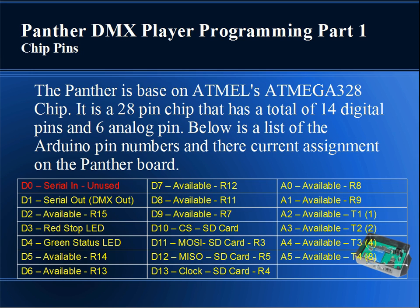Chip pins. The Panther is based on the Atmel ATmega328 chip. It is a 28-pin chip that has a total of 14 digital pins and 6 analog pins. Below is a list of the Arduino pin numbers and their current assignment on the Panther board. The Panther DMX Player is an output device, so there are two pins usually associated with input and output — D0 and D1 for serial input and serial output. As it's only a serial output device, the Panther does not use digital pin 0, and it's not available for you to use. Digital pin 1 is the serial output and can be used to send out DMX signal or other signals.